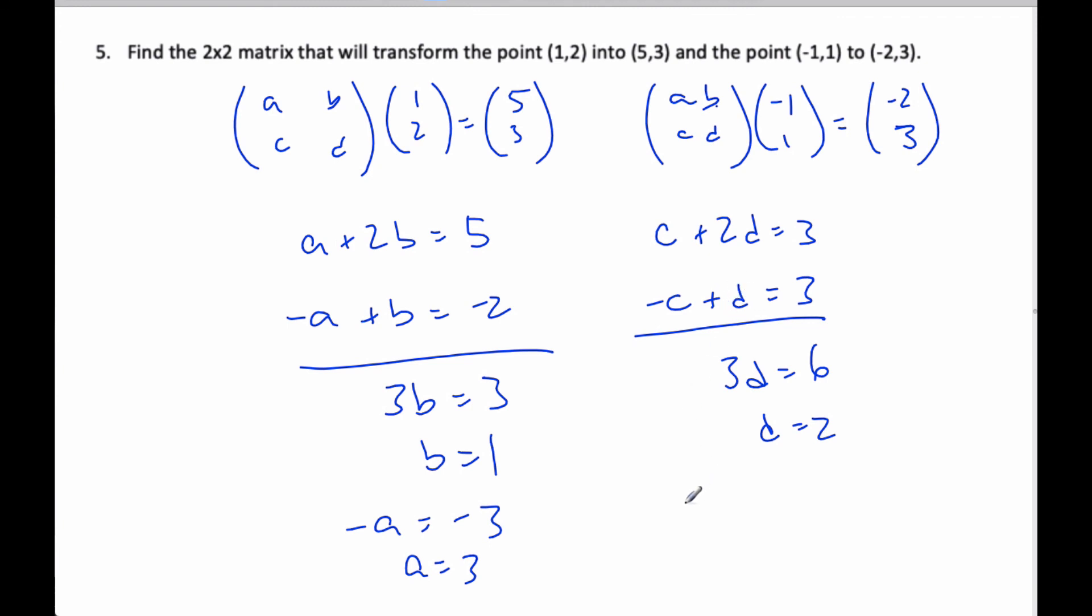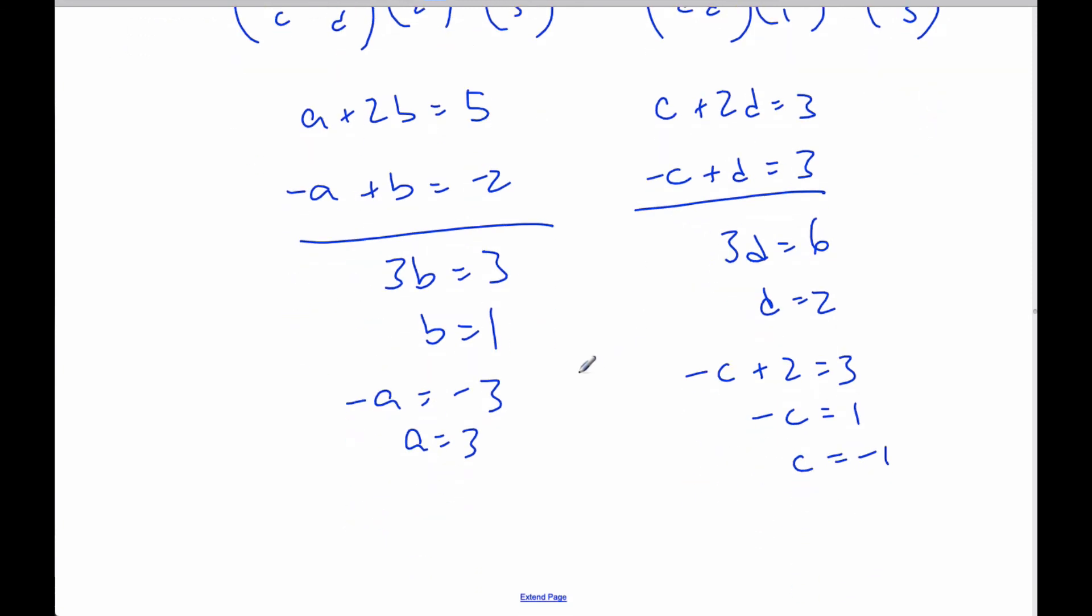If I plug in 2 here, it's -C plus 2 equals 3, -C equals 1, and so C equals -1. And so now I put it all together, my transformation matrix is 3, 1, -1, and 2.